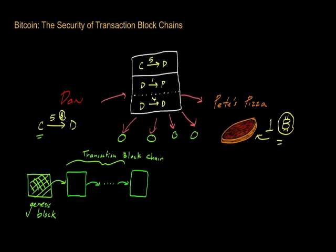That includes not only the transaction between Dan and Pete, but there may be other transactions floating out there that took place around the same time. The Bitcoin miners will basically look at all these different transactions at once and try to figure out how to form a transaction block out of them.